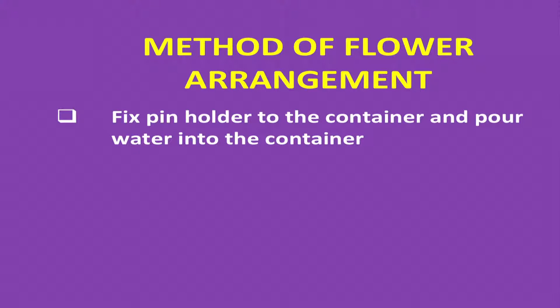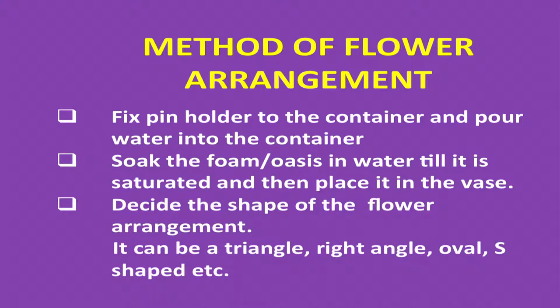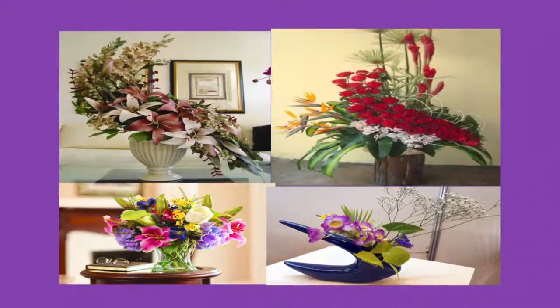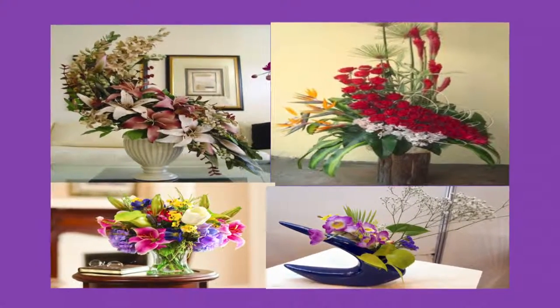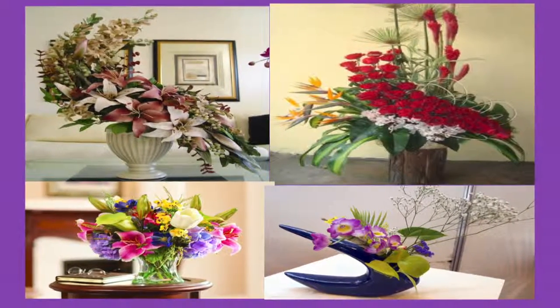Method for flower arrangement: first, fix the pin holder to the container and pour water into it. Soak the foam or oasis in water until it is saturated, then place it in the vase. Decide the shape of the flower arrangement — you can make it in a triangle, right angle, oval shape, edge shape, circular, and many more arrangements are available. This picture shows some arrangements of flowers, illustrating the shape as well as the different lines used to enhance beauty through flower arrangement.